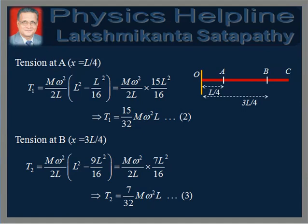Similarly, tension at a distance x equal to 3L by 4 is obtained by putting x equals 3L by 4 in equation 1, which gives T2 equals 7 by 32 M omega square into L.